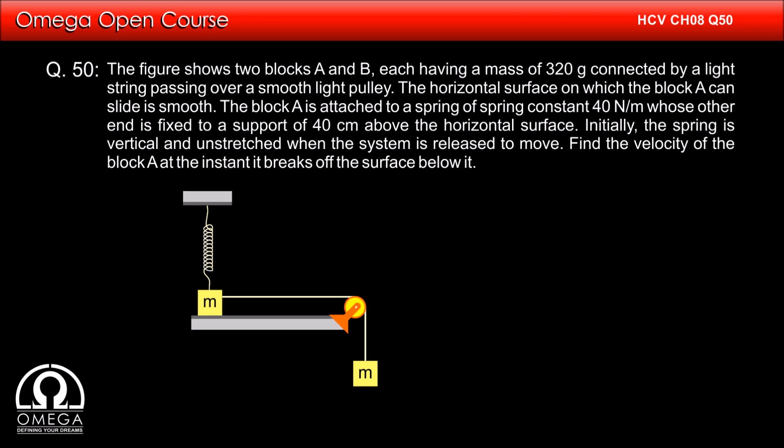Block A is attached to a spring of spring constant 40N per meter whose other end is fixed to a support 40cm above the horizontal surface. Initially, the spring is vertical and unstressed when the system is released to move. Find the velocity of block A at the instant when it breaks off with the surface below it.